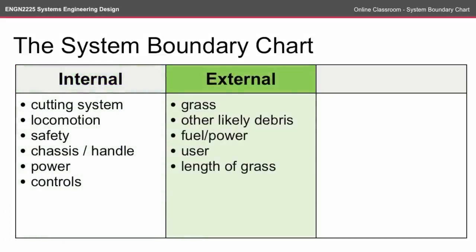Second, we have the external column — these are things that are likely to be inputs to my internal system. Here I've got things like grass and other likely debris, fuel, and power, because I'm not sure how I'm going to power the device yet. The user is an external input, because I'm expecting they will provide some sort of locomotion power or perhaps even just control information. And the length of the grass is something that's external to the system.